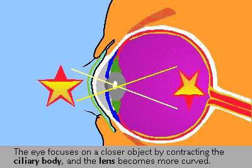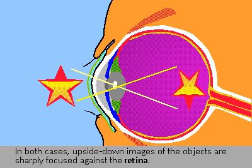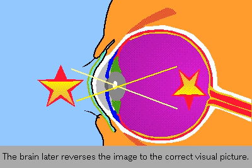In each case, the images are focused against the retina but are upside down. It is the brain that automatically reverses the image so that we perceive the correct visual image.